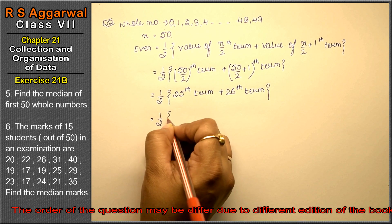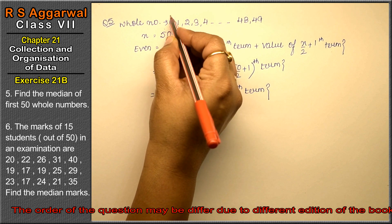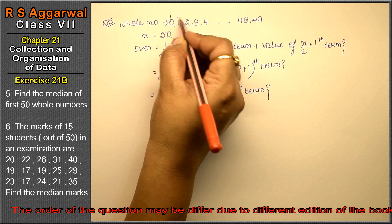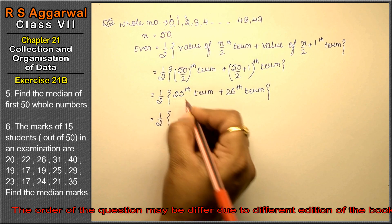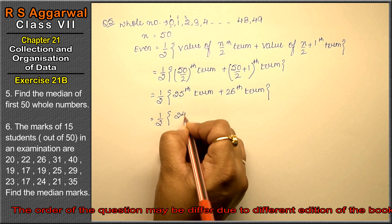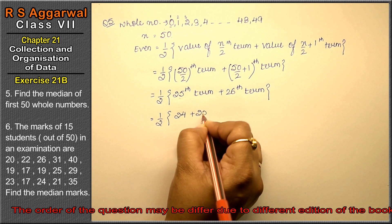Now see, 0 is our first value. 1 is our second, 2 is our third. So the value is one less than the term number. So the 25th term is 24 and 26th term is 25. That is 24 plus 25.